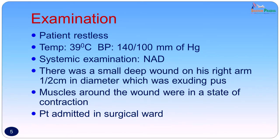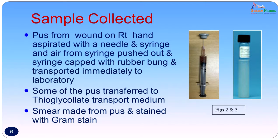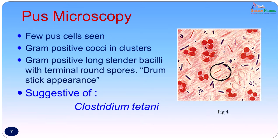The patient was admitted to the surgical ward. A sample was collected to confirm the clinical diagnosis. Pus from the wound on the right hand was aspirated with a needle and syringe, air from the syringe was pushed out, the syringe was capped with a rubber bung, and transported to the laboratory immediately. Some of the pus was also transferred into a transport medium — thioglycollate transport medium. Smears were made from the pus and stained with the Gram stain. On Gram stain, a few pus cells were seen, an occasional Gram-positive coccus in clusters was seen, and Gram-positive long slender bacilli with terminal round spores were seen, giving a drumstick appearance. The morphology was suggestive of Clostridium tetani.